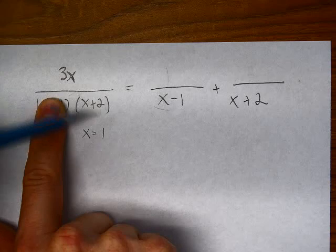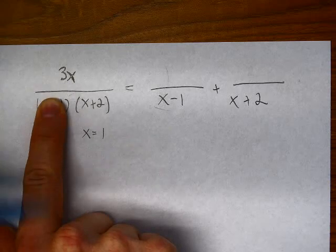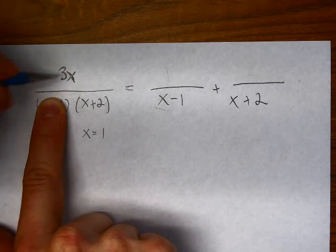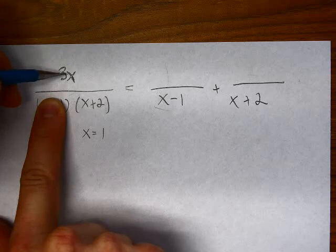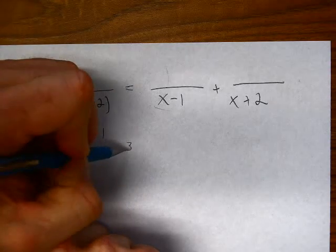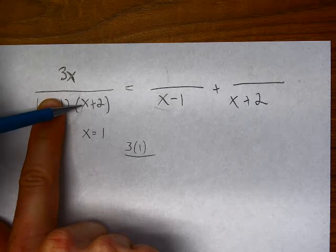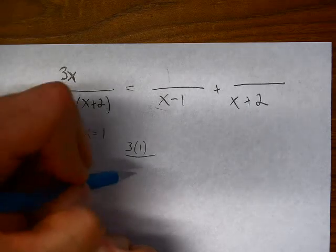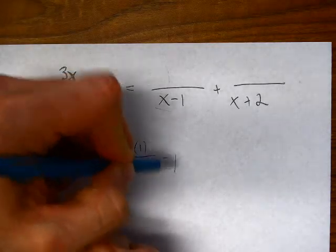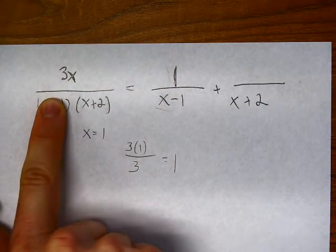All right, so then I'm going to take what's left and evaluate it at x equals 1. So here I have 3 times 1 is 3 over 1 plus 2 is 3. So that's 1. That's my numerator.